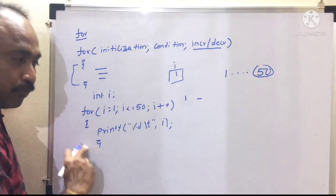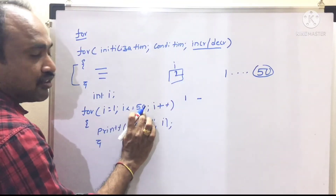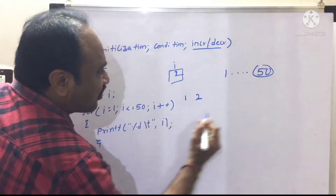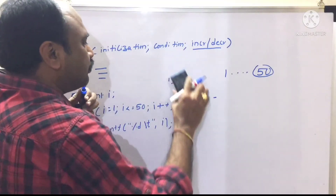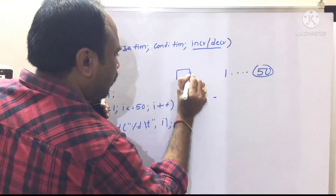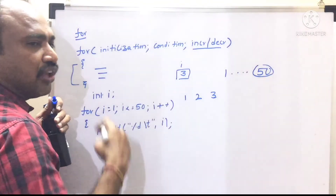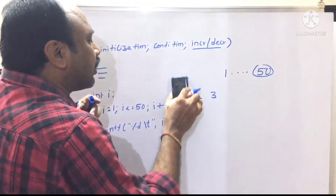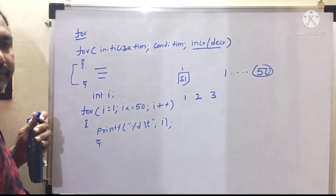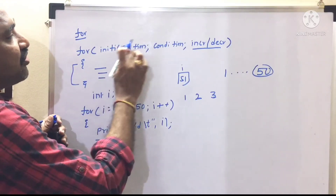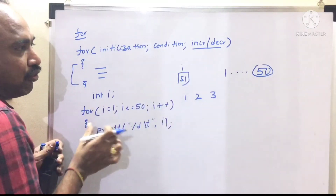After for closes, it goes back to increment: i++, i becomes 2; check condition 2 < 50 — true, 2 printed. Again i++ makes i = 3, condition true, 3 printed. Like that, 4, 5, 6, 7, 8 — until i becomes 51. Then 51 < 50 — condition false, come out. The advantage of for is that initialization, condition, and increment are all in a single statement at one place, so we cannot easily forget them.